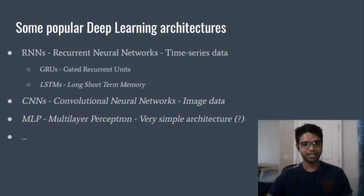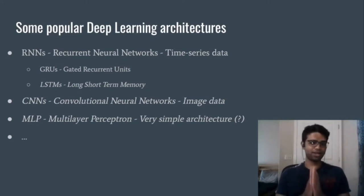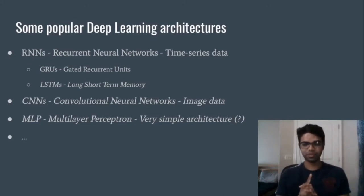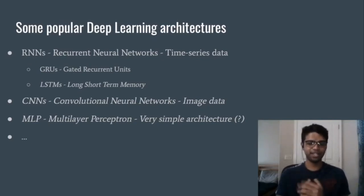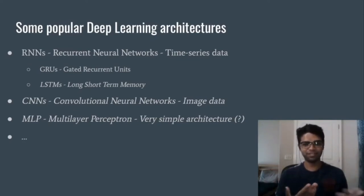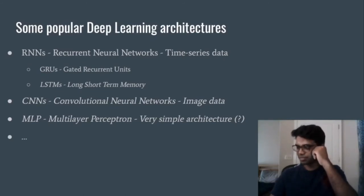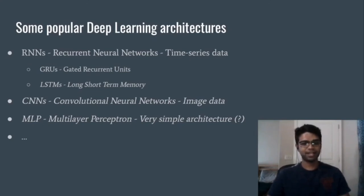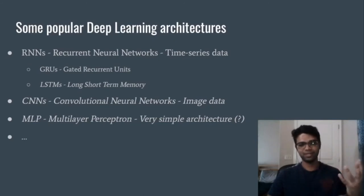Now that we have a basic understanding of RNNs, let's talk about Convolutional Neural Networks — CNNs. These are also neural networks you hear a lot about in the media. They are used primarily with image data, though there have been documented uses of CNNs with different types of data. Lastly, let's talk about Multi-Layered Perceptrons, or MLPs. MLPs are the simplest neural network architecture — basically just units all connected to each other across different layers.